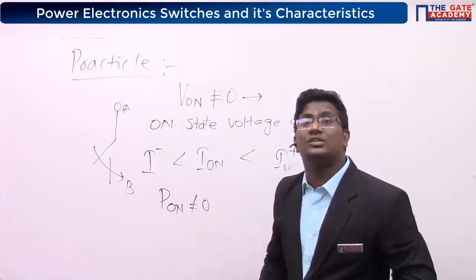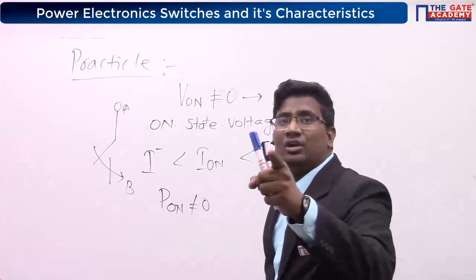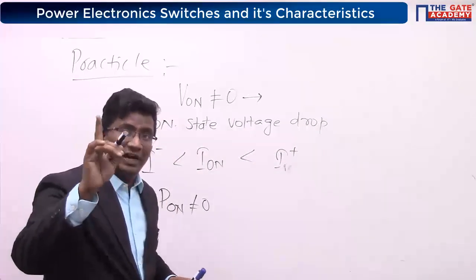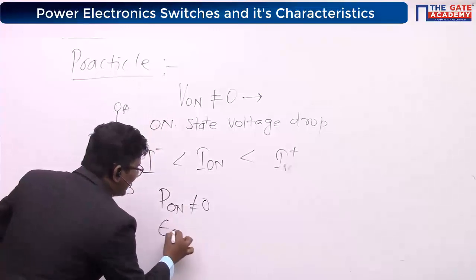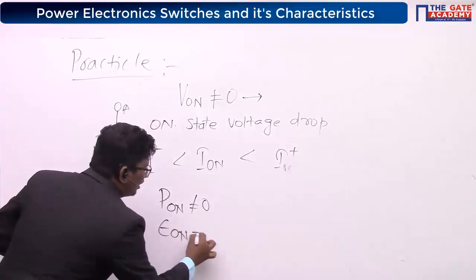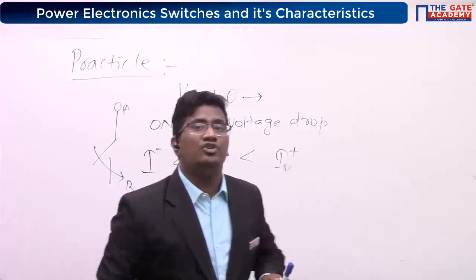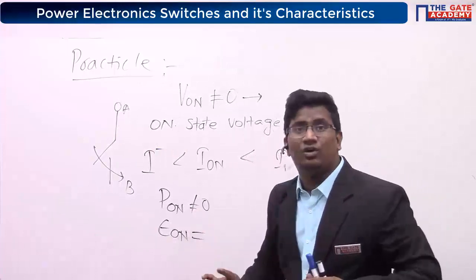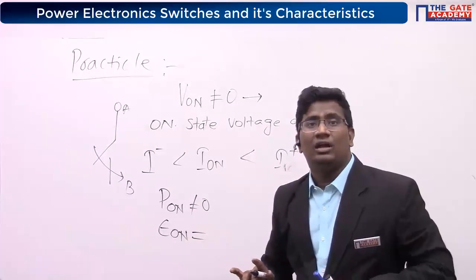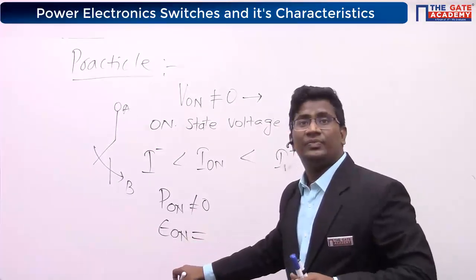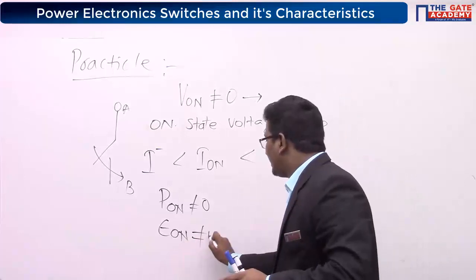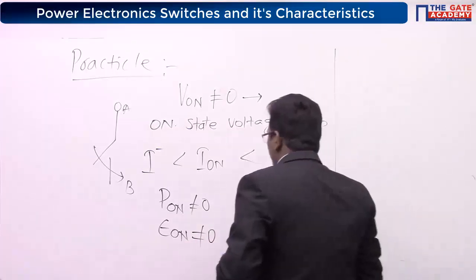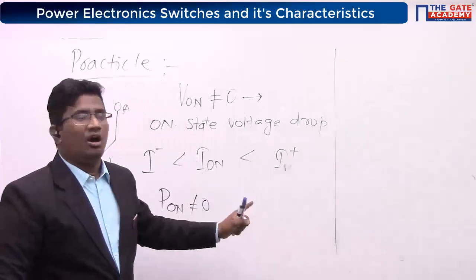These losses are called conduction losses. Conduction losses are finite values, which means the energy loss during the on-state is also not equal to zero — it is a finite value. Keep that noted for the on-state condition.